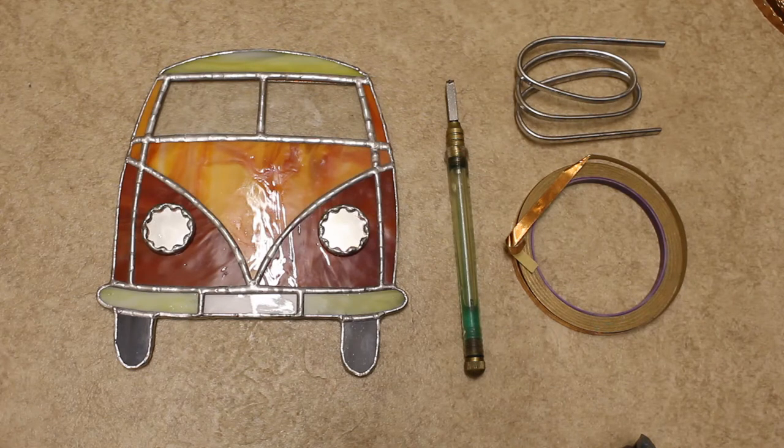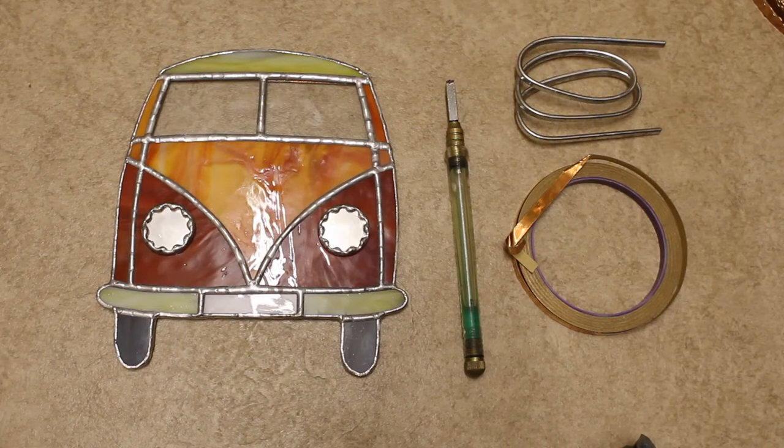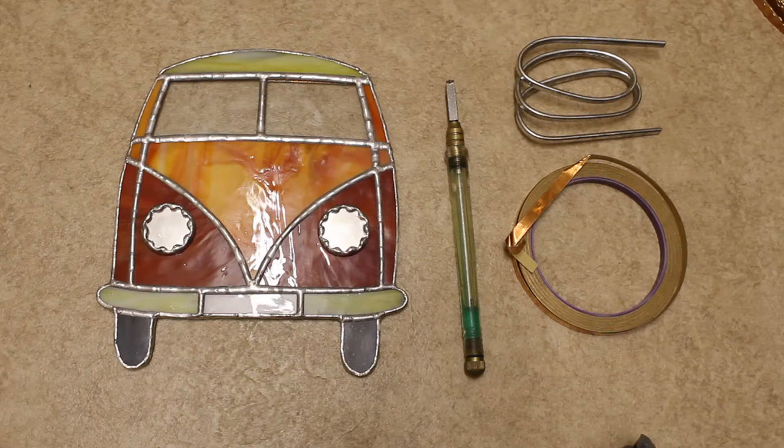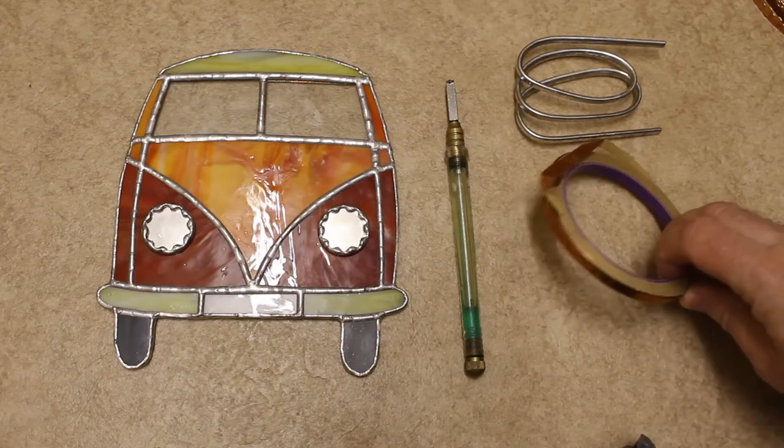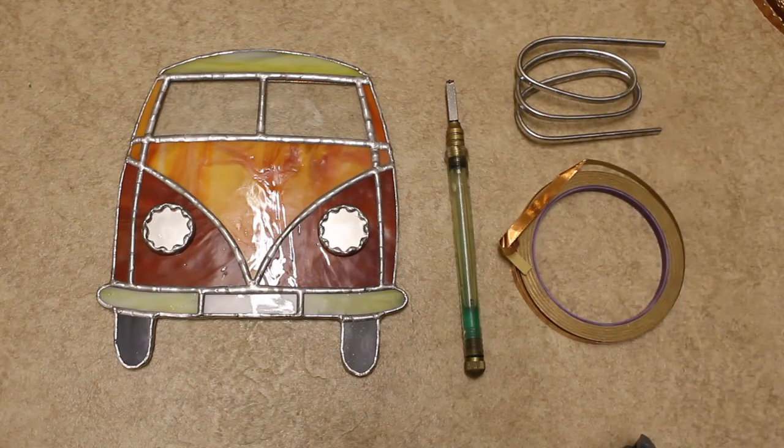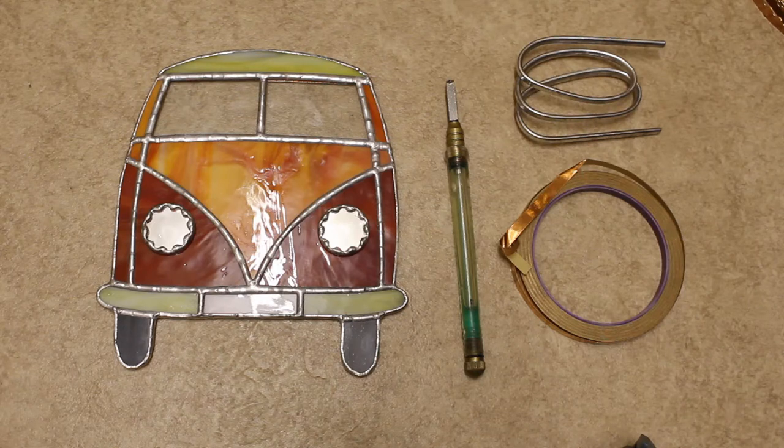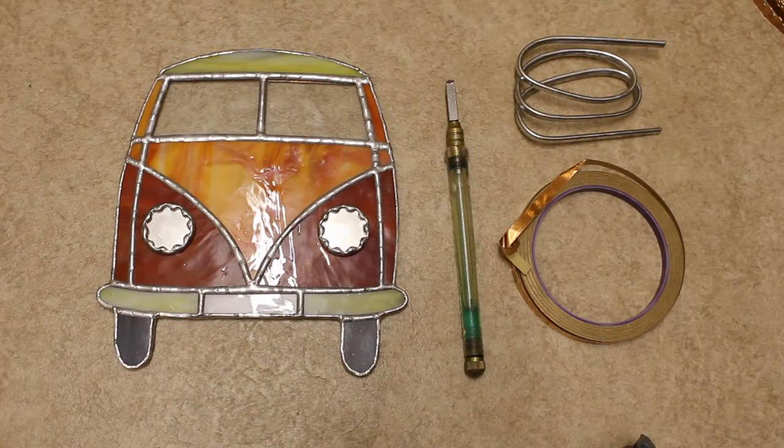So this is a nice little camper project. It's basically Tiffany style using some nice colored glass, copper foil, and lead tin solder. As you can see, I've got a nice little camper at the end. I think it's taken about four hours to do, so I hope you enjoy this Instructable.